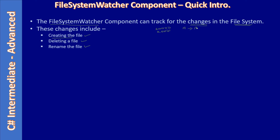Changing the content of a file is also considered a change to the file system. For example, if it is b.txt and some content is added, deleted, or modified, that counts as a change. With the FileSystemWatcher component, we can track all these changes.